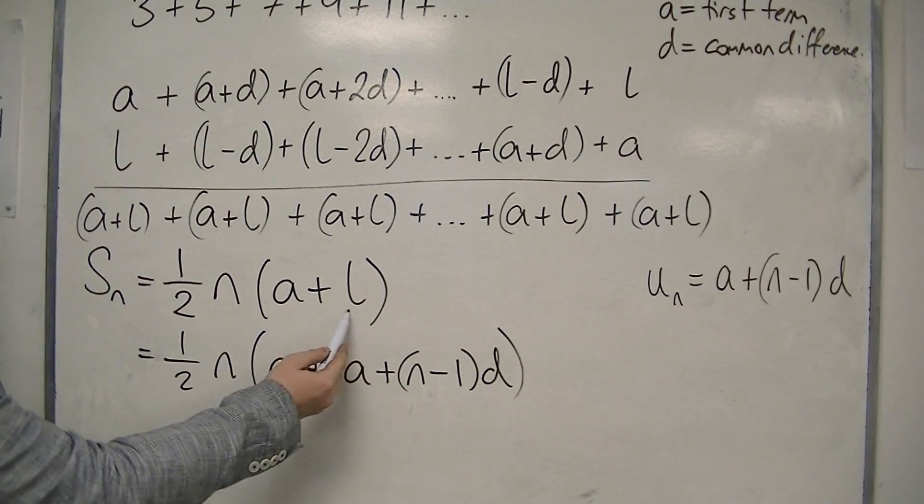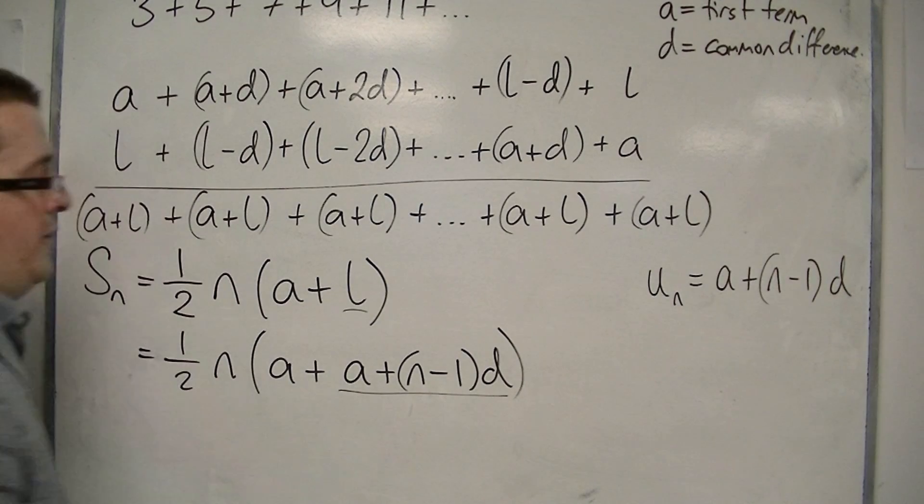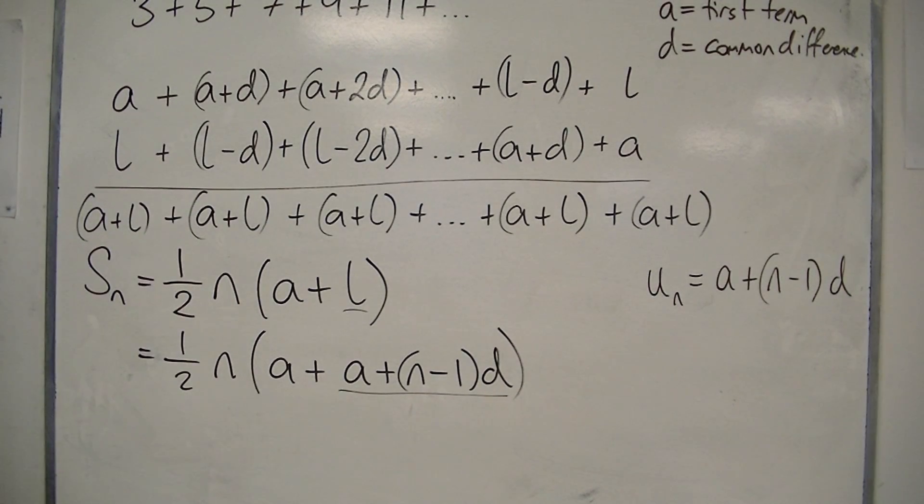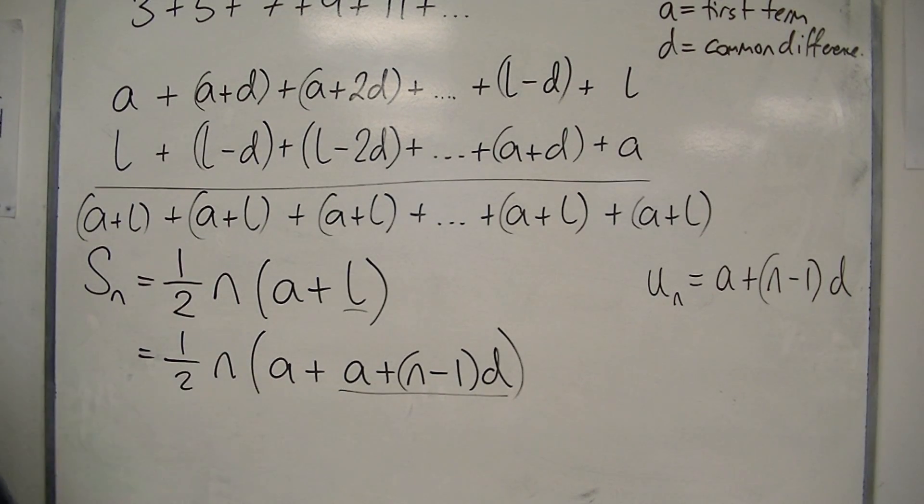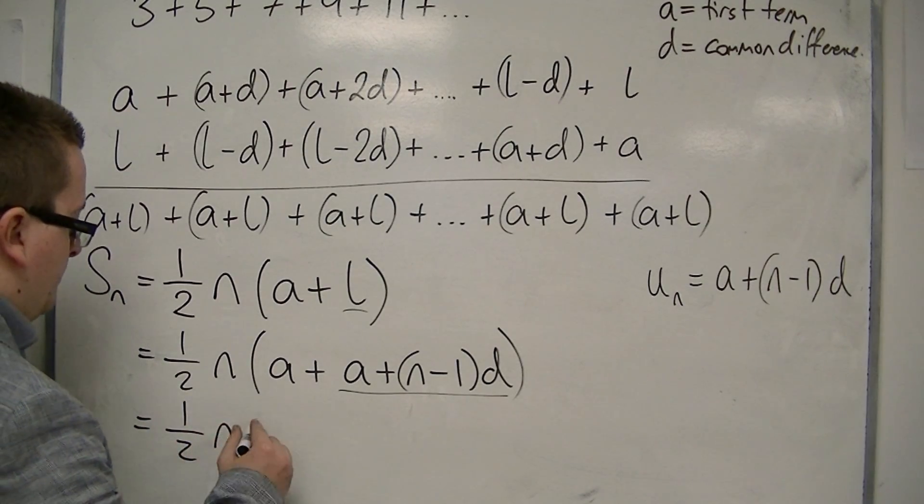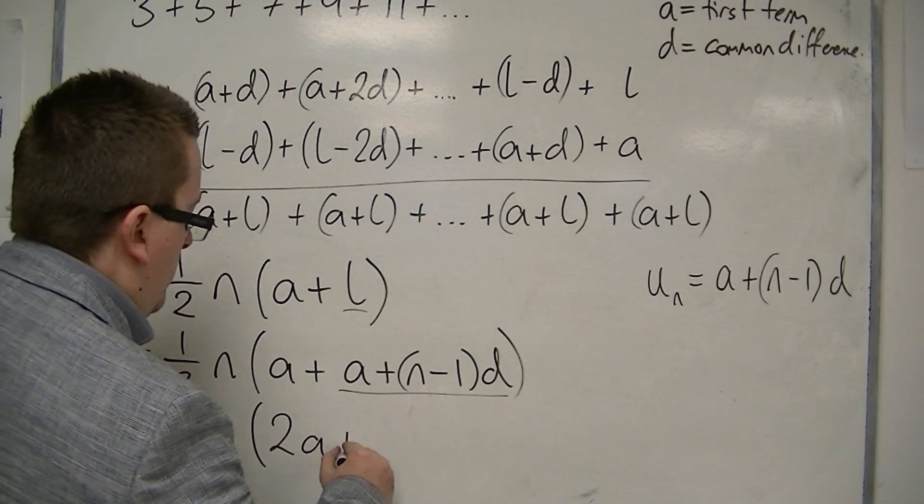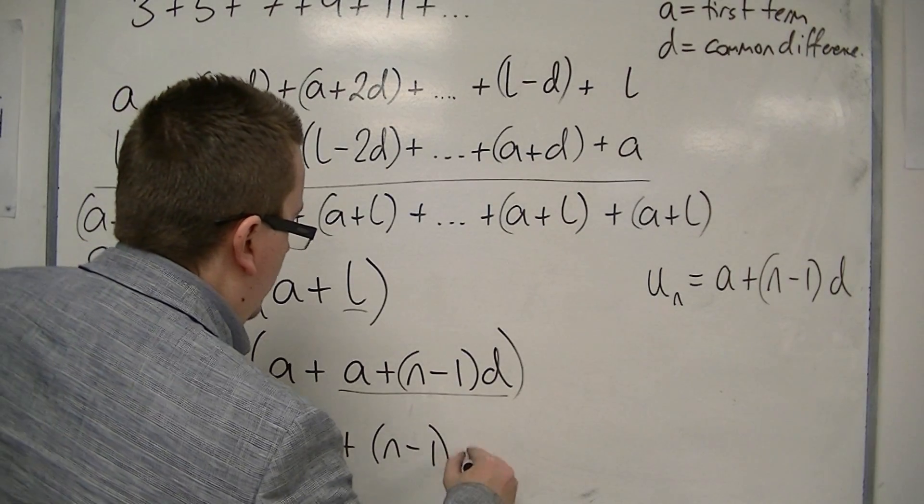There we are. I've replaced the L with A plus N minus 1D. And what I find is I've got A plus A there, so I can simplify that and make it nicer. And have 2A plus N minus 1D.